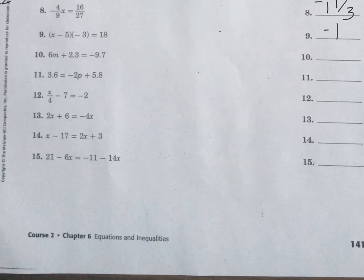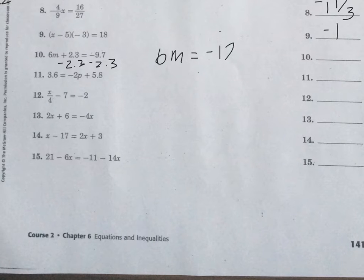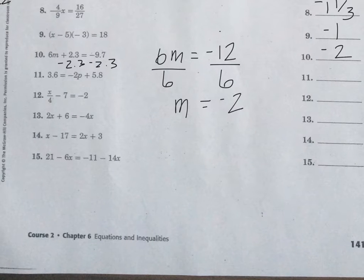Number 10 is a two-step equation. You first need to subtract 2.3 from both sides, so you have 6m equals negative 12. Then divide by 6 to get m by itself, and m equals negative 2. So the answer to number 10 is negative 2.